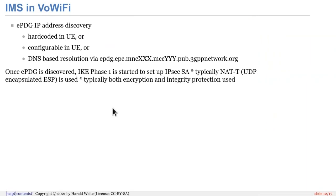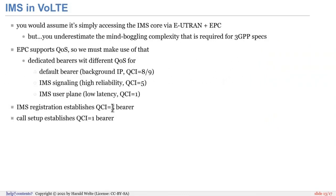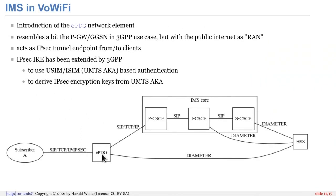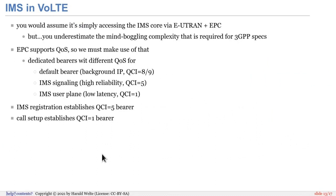That's voice-over Wi-Fi in a nutshell. If we look at voice-over LTE, you could assume it's basically what we discussed before but using LTE as an access network. However, since the Evolved Packet Core — the LTE core network — supports quality of service on the entire Evolved Packet System including the RAN, we must make use of that. This means we actually create multiple so-called dedicated bearers with different quality of service for different IP flows.